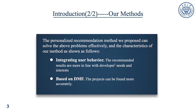Therefore, we proposed a personalized recommendation method based on Deep Matrix Factorization to solve these problems. First, we score user behavior based on their actions to integrate user behavior and generate a user-project matrix, which can make our recommendation results more personalized and meet users' needs better. Second, we use the DMF model to fully combine users' explicit and implicit feedback, which captures users' potential preference. In this way, we can improve the accuracy of recommendations.